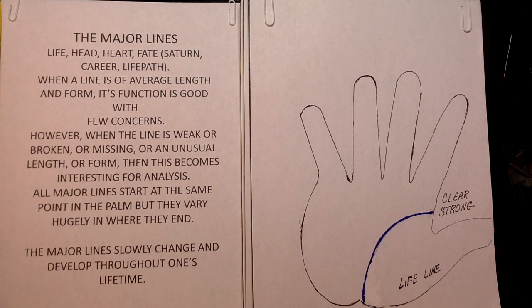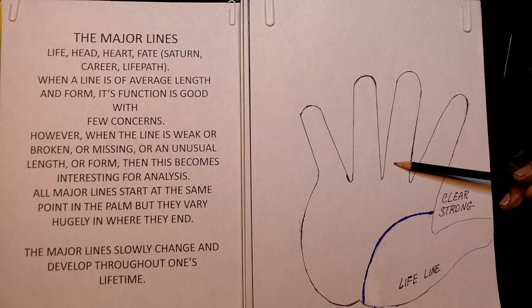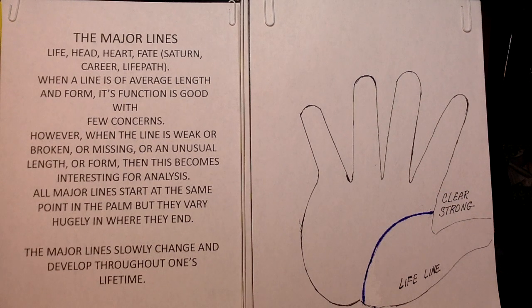They are the life, head, heart, fate, and the fate has several names. Saturn line, because the line moves toward the Saturn finger. Also, it can be called a career, because it represents your job, what you want to get into, therefore a career, or life path. What direction are you going in? So all those terms do apply.